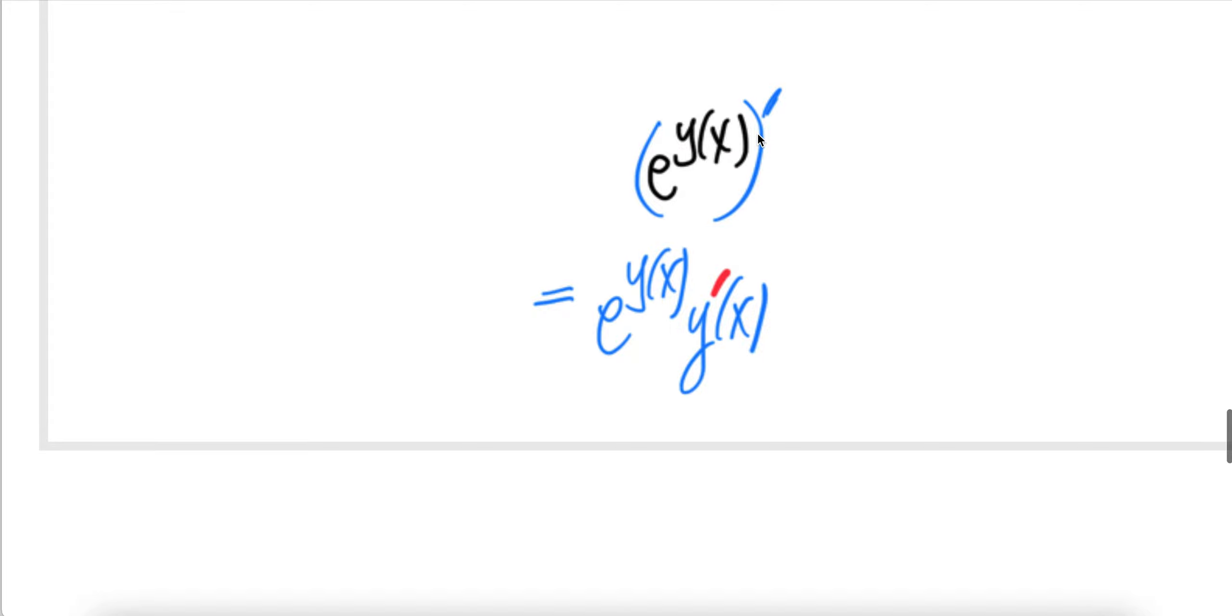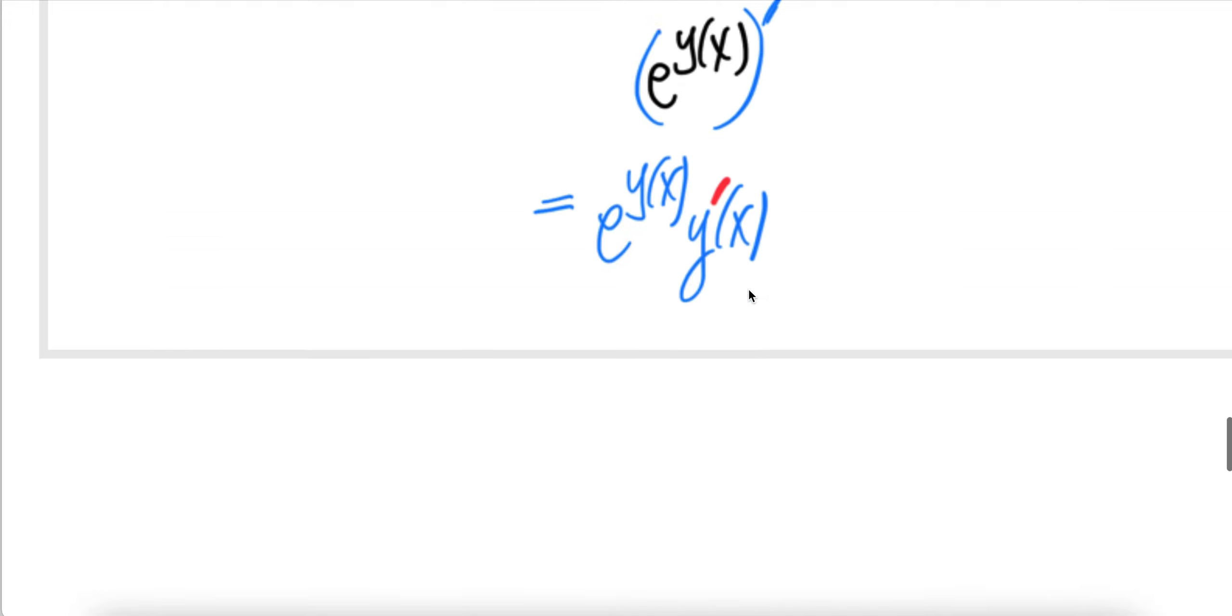Now derivative of this is, derivative of e to power something equals something, times the derivative of that something, which is y prime. Done.